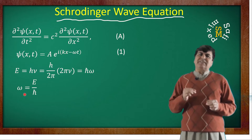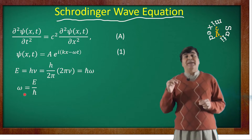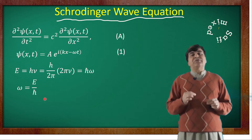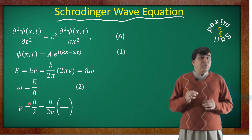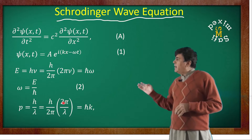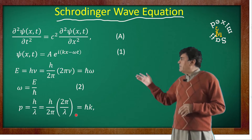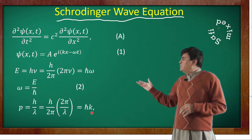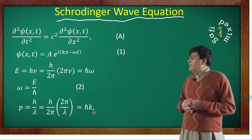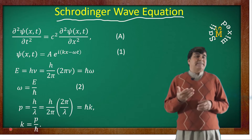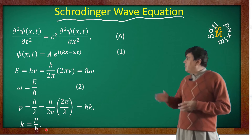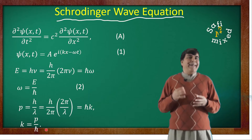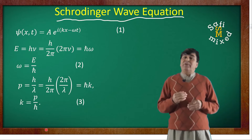Similarly, Schrödinger ingeniously encoded the wave behavior of particles in equation A by replacing the wave vector K using the de Broglie hypothesis: p equals h divided by lambda. Multiplying and dividing by 2 pi gives p equals h-bar times 2 pi over lambda, where 2 pi over lambda equals K. So p equals h-bar K, and therefore K equals p divided by h-bar — equation 3.